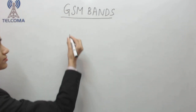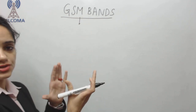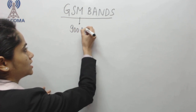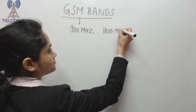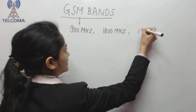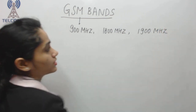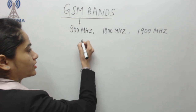Hello and welcome to the class on GSM. Today we are going to discuss GSM bands. A band is basically a range of frequency. For GSM, we have 850, 900, 1800, and 1900 megahertz bands available for GSM services, and these are used for radio communication.